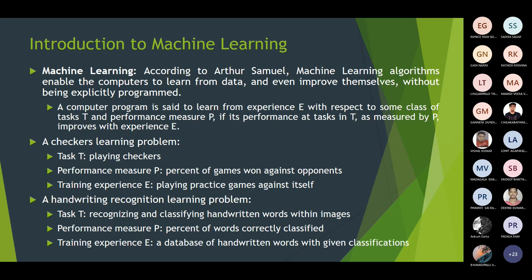Consider a computer program learning from experience E — here experience E is the training data. This computer program tries to learn from the training data with respect to some class of task T. When the program is able to perform the task, there will be some performance that can be denoted by P.